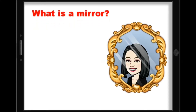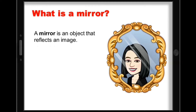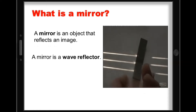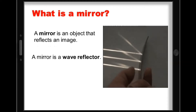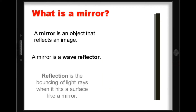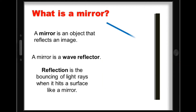What is a mirror? A mirror is an object that reflects an image. A mirror is a wave reflector. Reflection is the bouncing of light rays when it hits a surface like a mirror.